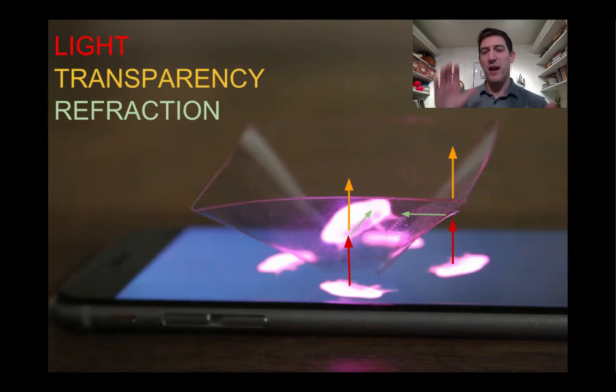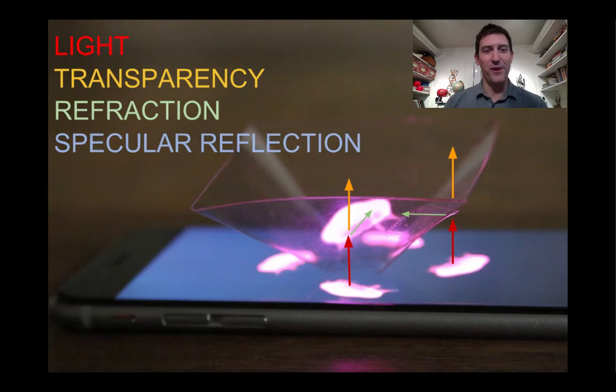Now refraction is what we would consider the opposite of reflection. When it hits that plastic, it's actually refracted or bent and goes in a certain angle. I'll show you how to figure out that angle if you're interested in just a second.